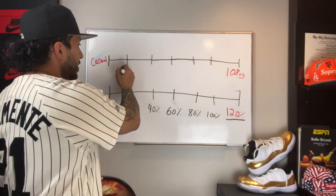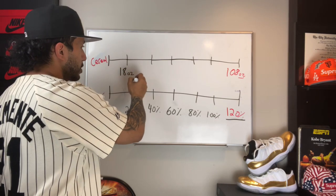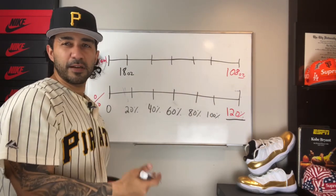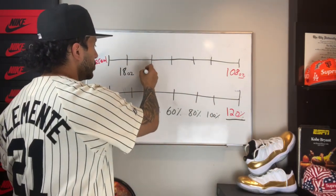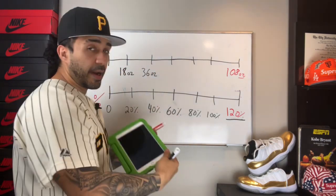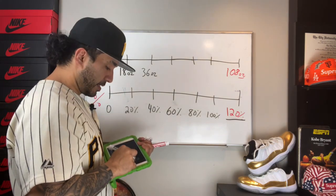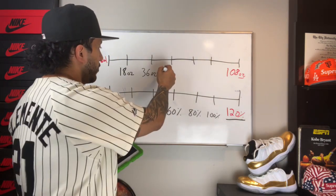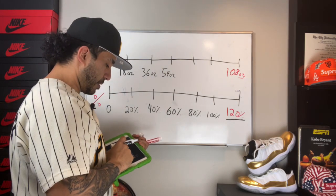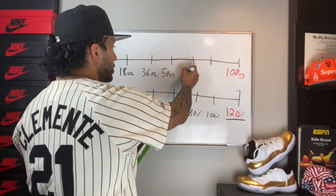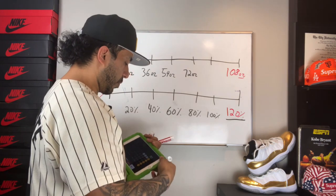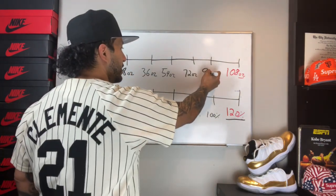So 20% is 18 ounces. Now I can fill in the rest of this table. What's 18 times two? It's 36 ounces. 18 times three — got my calculator here, it's not cheating — 18 times three is 54 ounces. 18 times four: 72 ounces. And 18 times five, which is going to give me my 100% — the original box had 90 ounces in it.